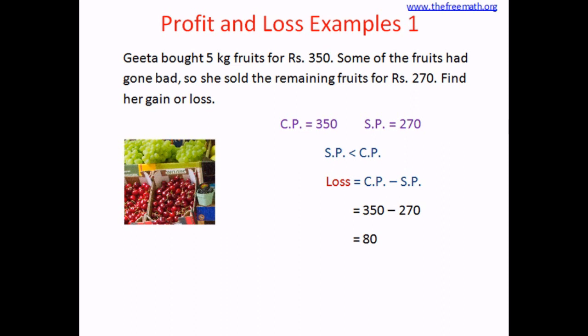The subtraction equals 80. You can do mental math here: 270 plus 100 is 370, and this is 350, so 20 less. That's why 100 minus 20 equals 80. Therefore, Geeta incurred 80 rupees of loss.